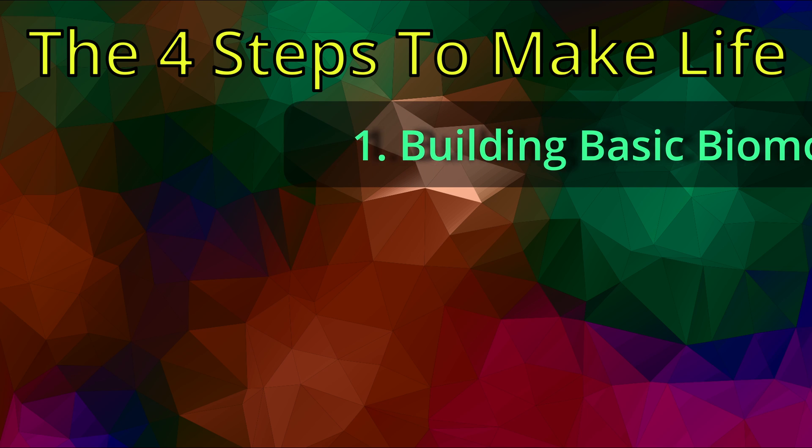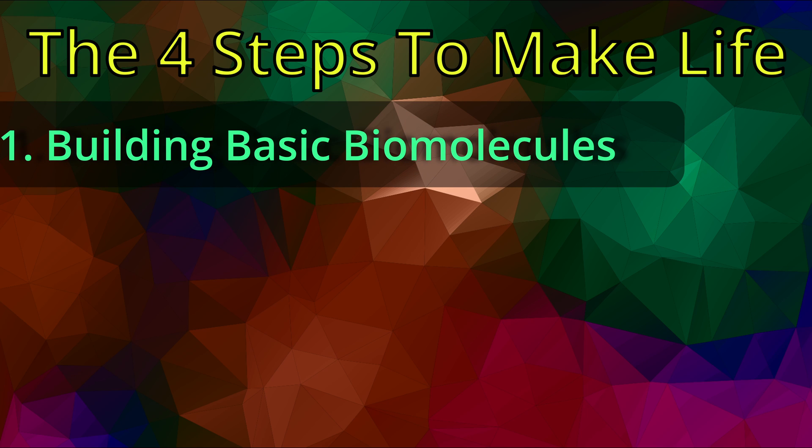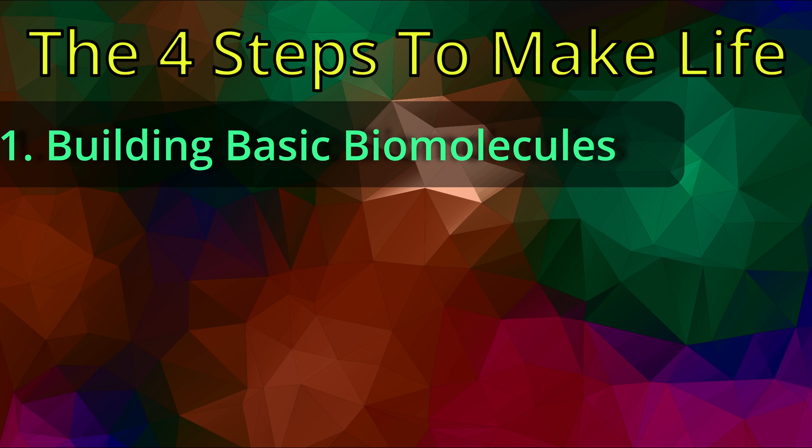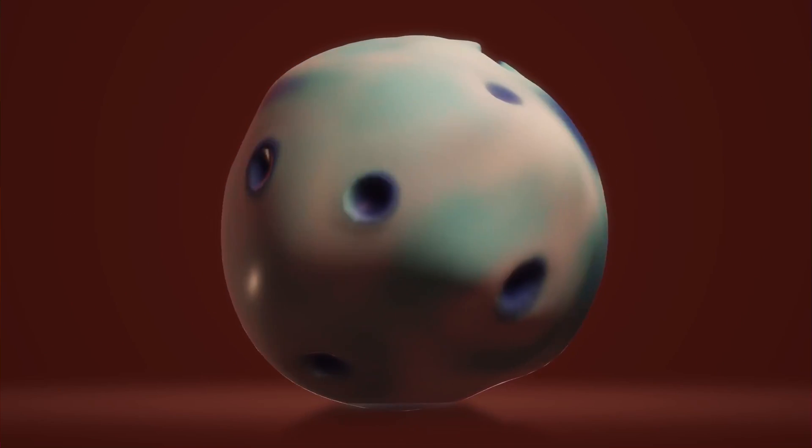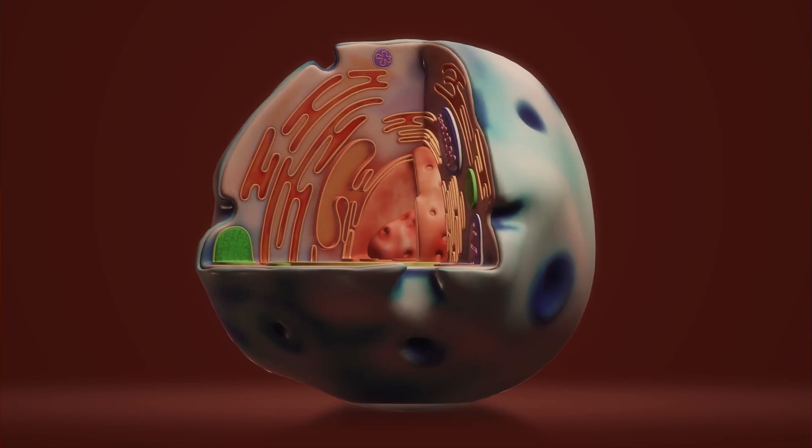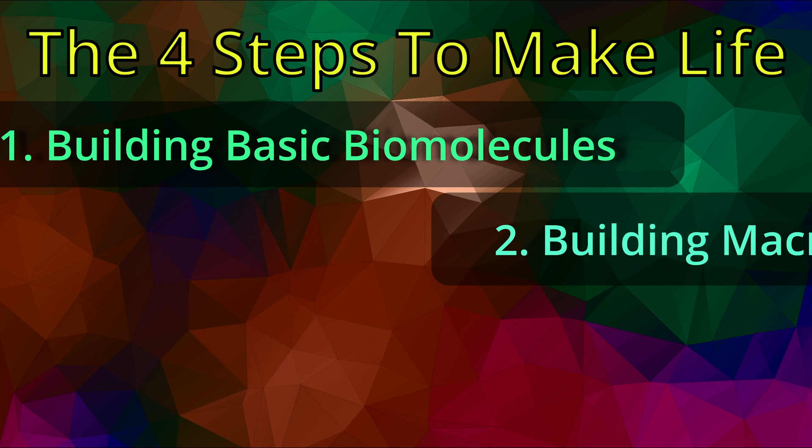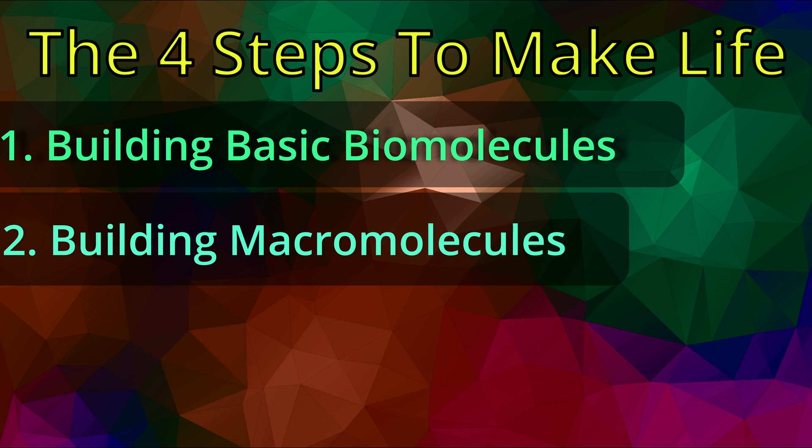The four steps we need to accomplish are: one, building the basic biomolecules that, when combined in the right way, make up the massive biomolecules that make up all the various components of cells, components like proteins and DNA. In the second step, these basic biomolecules are going to have to be combined to make the aforementioned massive biomolecules.